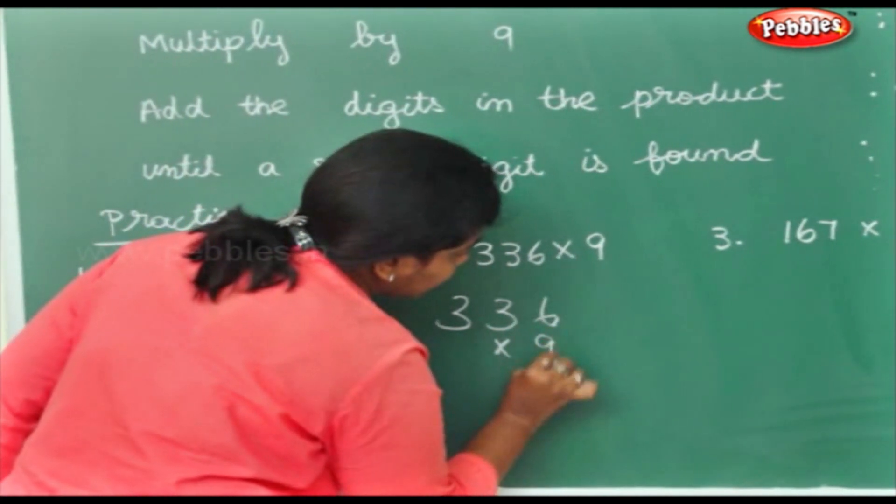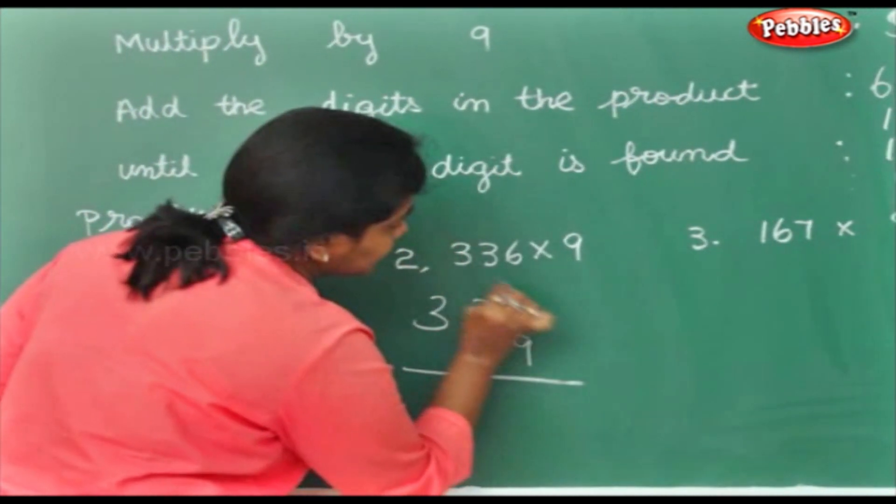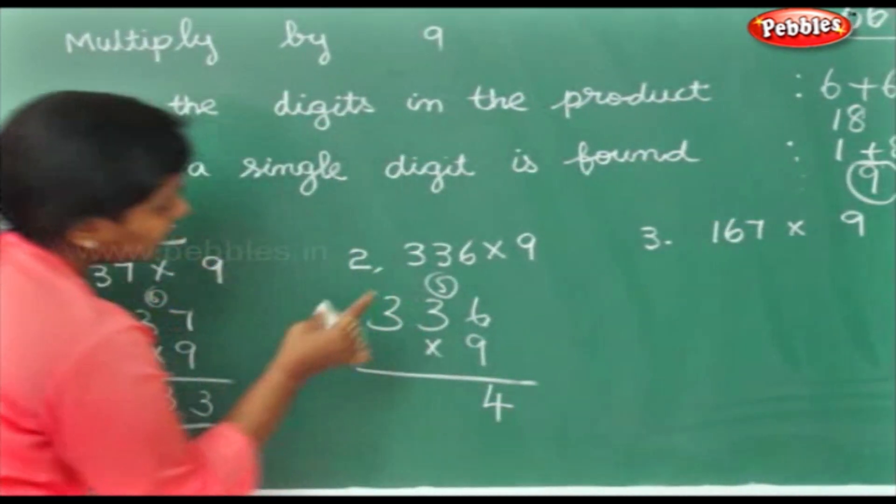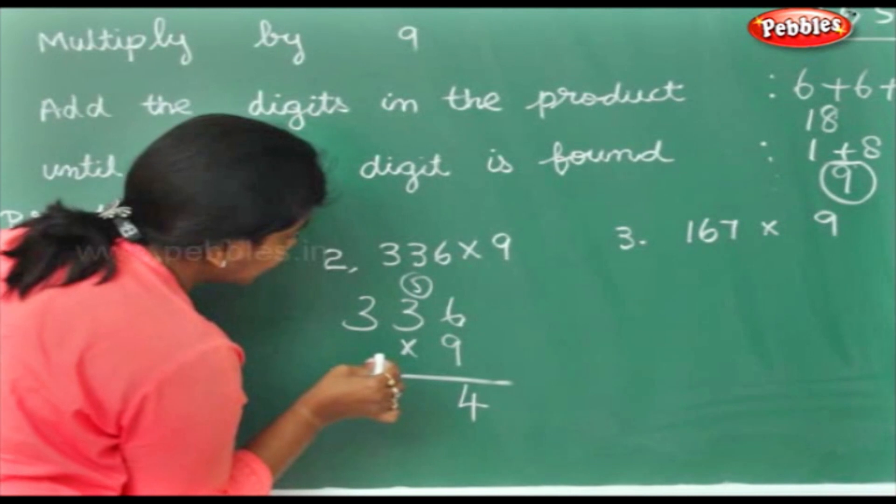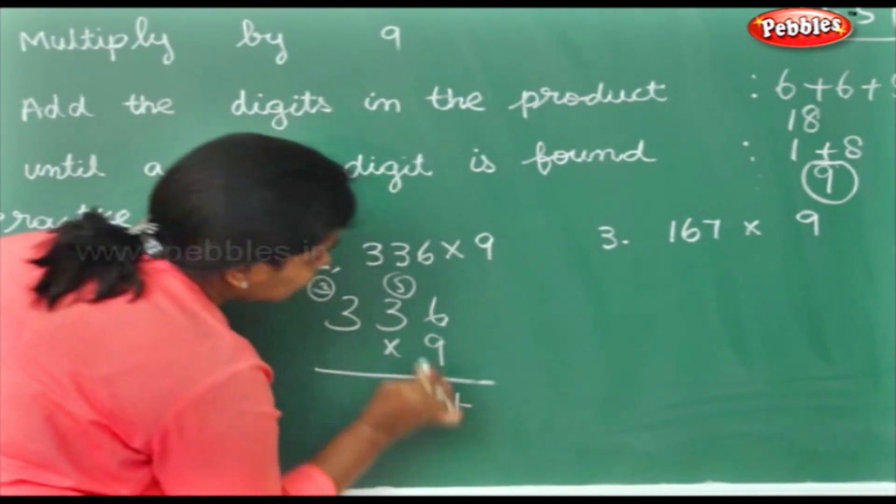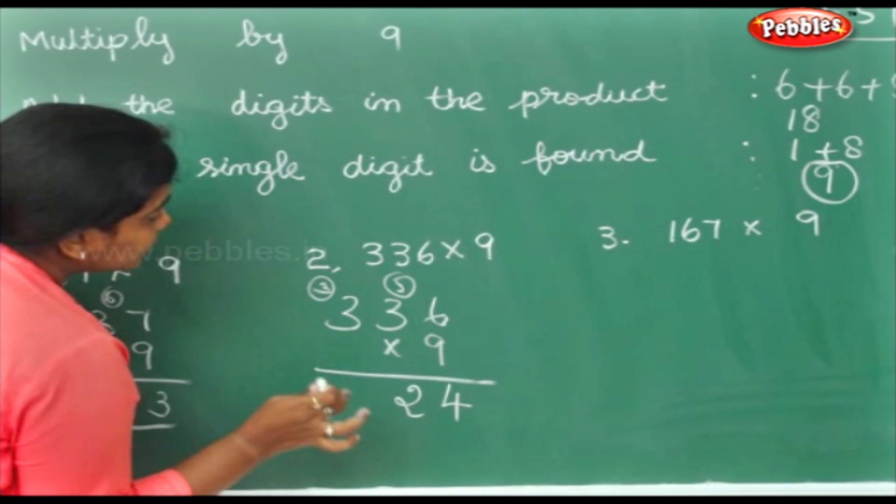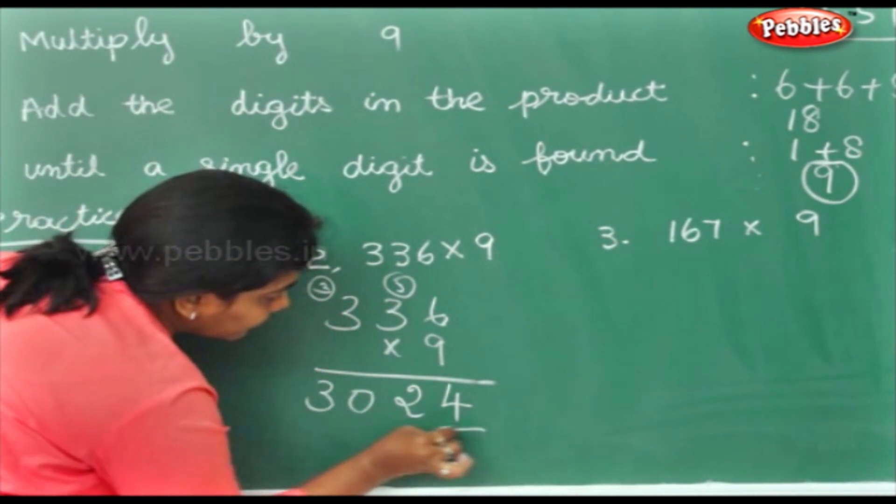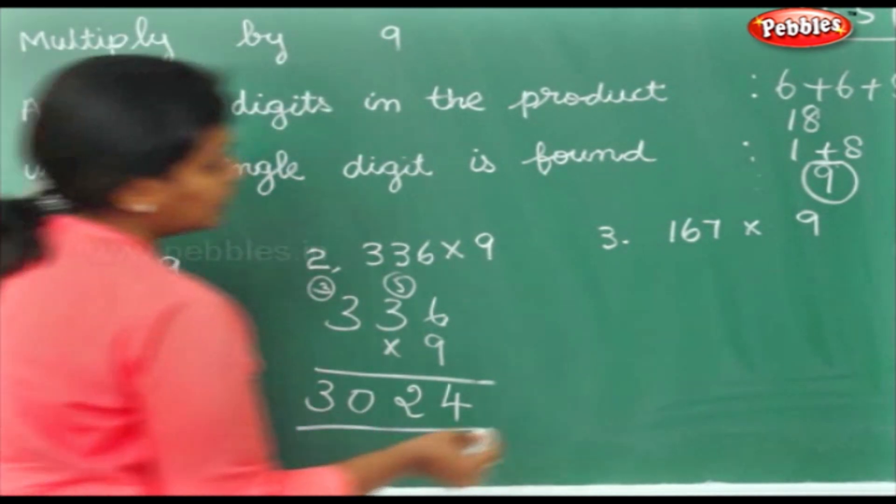336 into 9. 9 6's are 54. 9 3's are 27 plus 5, 32. Again, 9 3's are 27. 27 plus 3 is 30.